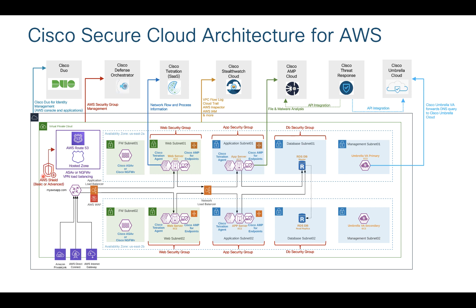Another important thing is AWS Shield, which is a DDoS service that provides protection against distributed denial of service attacks. Basic Shield is available to all users. If you want advanced DDoS protection, you need to purchase that service directly from AWS. There is also WAF — Web Application Firewall — available as a native service from AWS, which you can use to protect your workloads from web exploits.